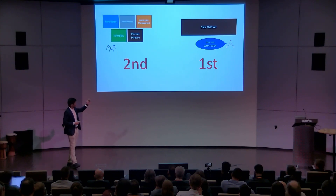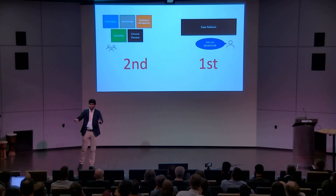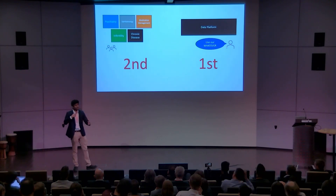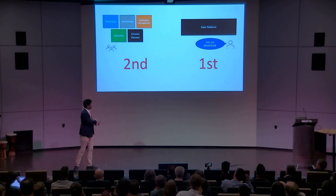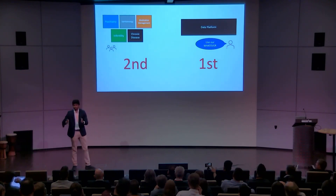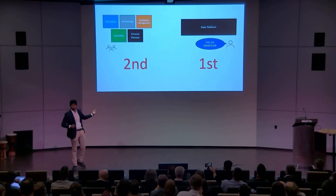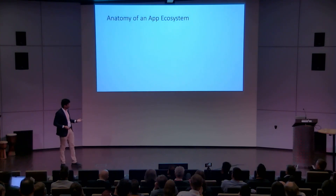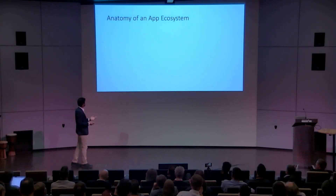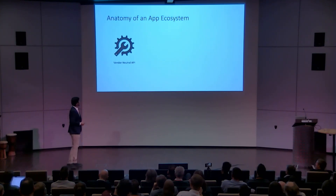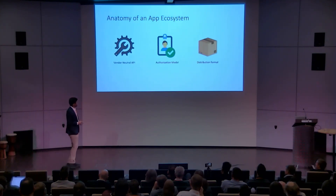Use the data platform, have it there, and as soon as you have the regulation pushing people to use a protocol, the apps will come. We need to break down what an app ecosystem really needs: a vendor-neutral API, some sort of authorization or permission model, and a distribution format.